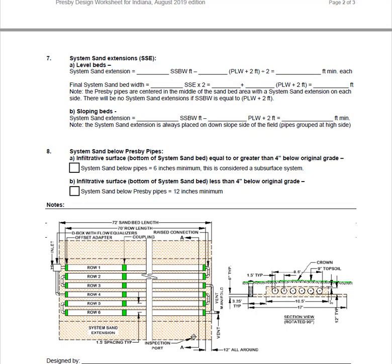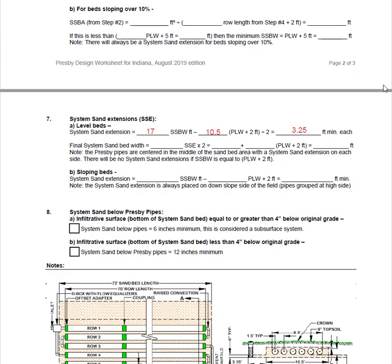Let's determine what our system sand extensions will be. There are two options: A for level beds and B for sloping beds. We will use the level bed option. The first value is our system sand bed width of 16.7 feet, which we will round up to 17 feet for ease of construction. The next value is our pipe layout width plus 2 feet, which brings us to 10.5 feet. We subtract 10.5 feet from 17 feet and get 6.5 feet, which is then divided by 2. This gives us a 3.25-foot system sand extension on each side of the bed. We can verify: 3.25 multiplied by 2 equals 6.5, plus our pipe layout width plus 2 feet of 10.5, confirming our 17-foot final system sand bed width.